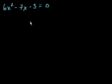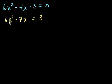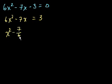But let's complete the square here. So let's add 3 to both sides of that equation. We get 6x squared minus 7x is equal to 3. I also don't like this 6 coefficient — it complicates things. I like to have it as x plus a squared, not with a coefficient on the x squared term. So let's divide both sides of this equation by 6, and you get x squared minus 7/6 x is equal to 1/2.